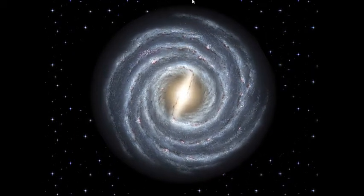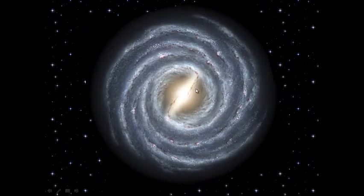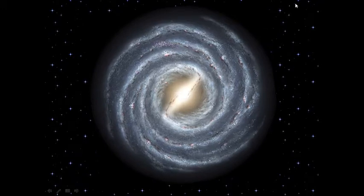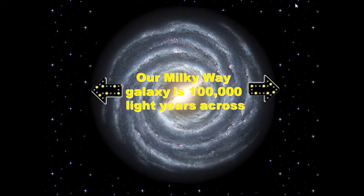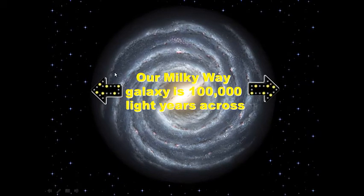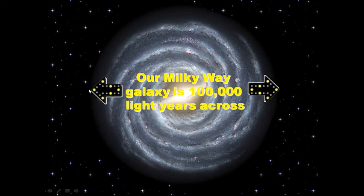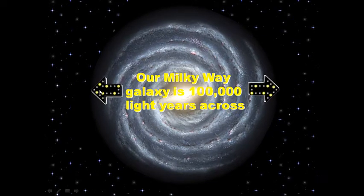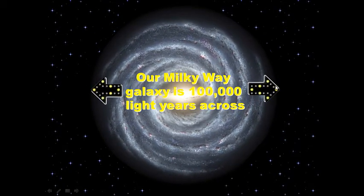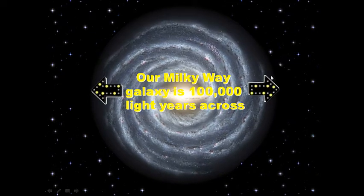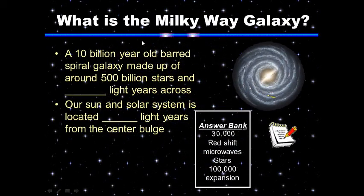In the center of the galaxy it's very dangerous — there are supermassive black holes and a very high density of stars. We're out here in the 'country,' which is good; we don't want to be near the center. Our Milky Way galaxy is 100,000 light-years across, meaning it takes light — the fastest thing in our universe — 100,000 years to travel from edge to edge.